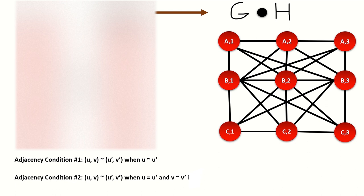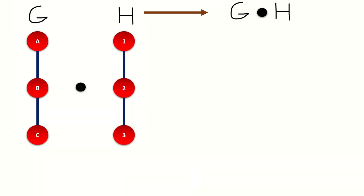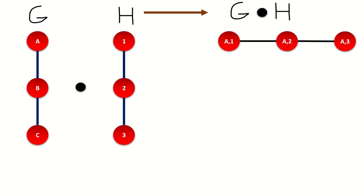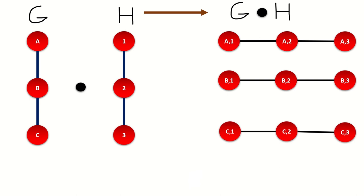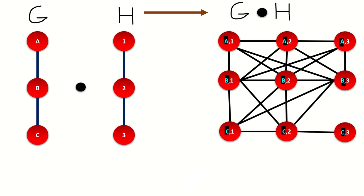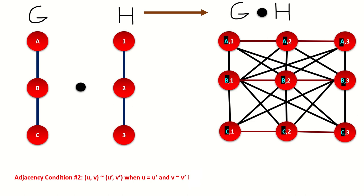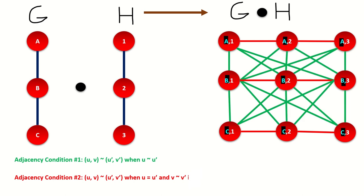Before we move on to the next example, let's cover the intuition behind a lexicographic product, as that will let us calculate these products much quicker. A more intuitive way to look at the lexicographic product is this: copy your right graph for each vertex in the left graph. Then, for copies whose left entries are adjacent vertices in graph g, connect each vertex in one copy to every vertex in the other copy. The second adjacency condition tells us how to connect vertices within each copy of the right graph h, and the first adjacency condition tells us how to connect vertices in different copies to each other according to the adjacencies in the left graph g. The intracopy edges arise from the second adjacency condition, the intercopy edges arise from the first adjacency condition, and the graph being copied is graph h, the right graph.